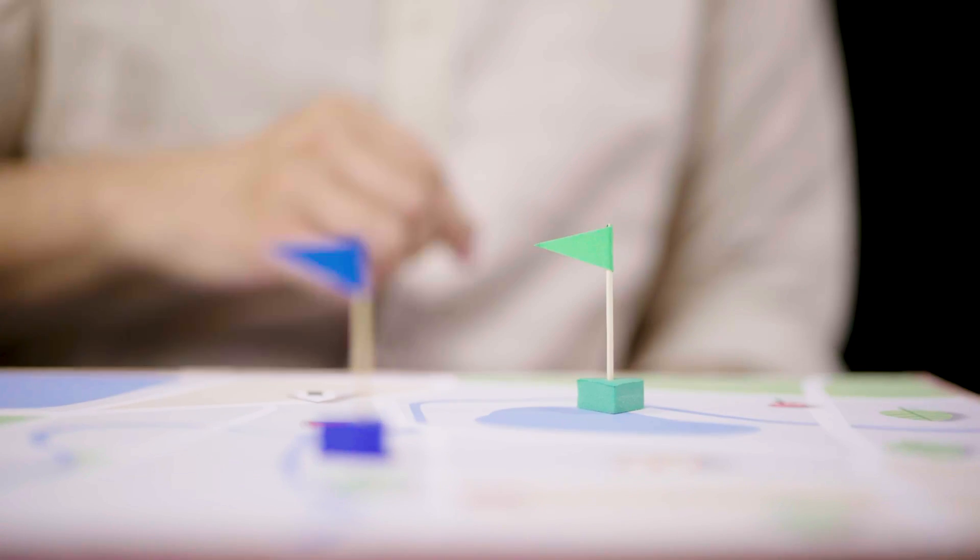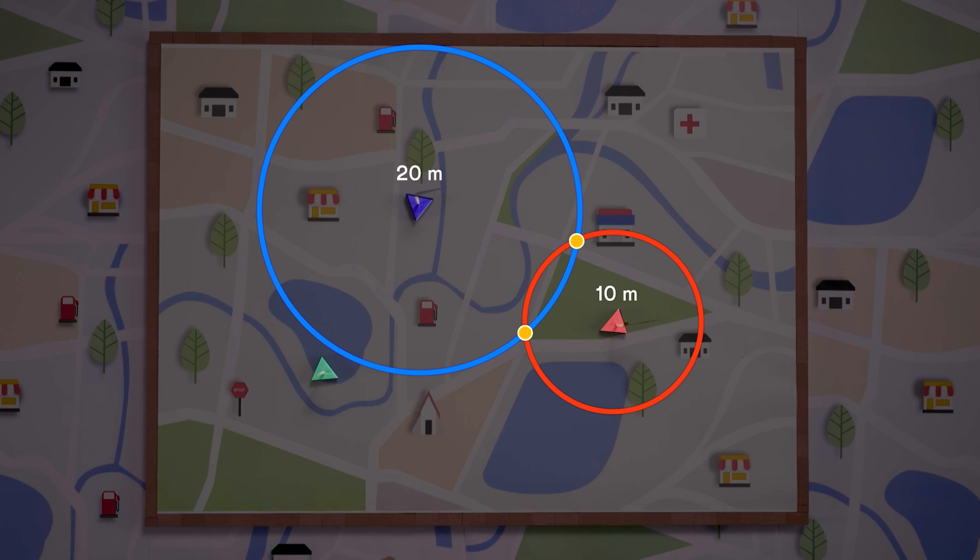But still not precise. To pinpoint my exact location, we will need a third flag. Say I tell you that I am 30 meters from this green flag. We get another circle of possibilities.